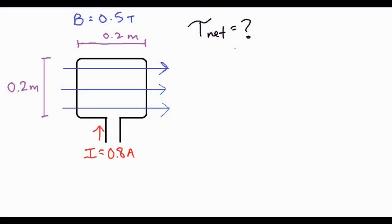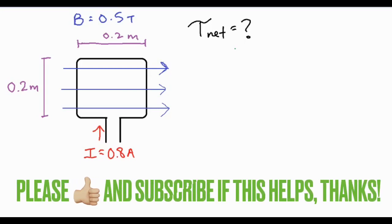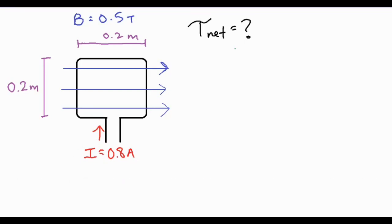In this video we're going to be solving for the net torque on a current-carrying loop in a magnetic field. If you take a look at this loop, we have a current of 0.8 amps coming around, going clockwise around this loop.